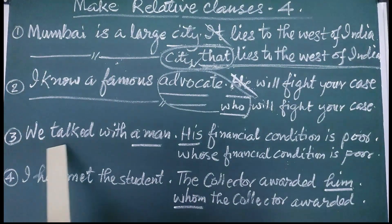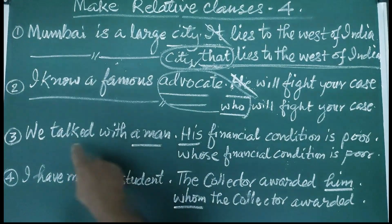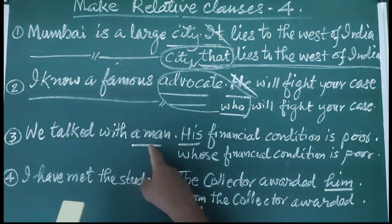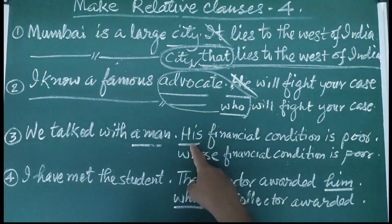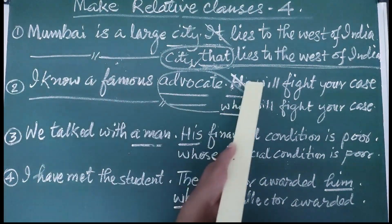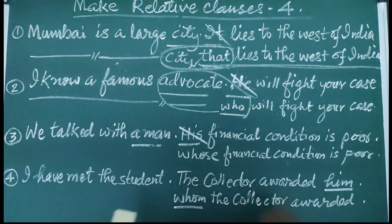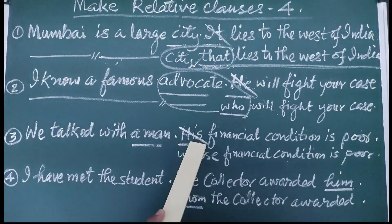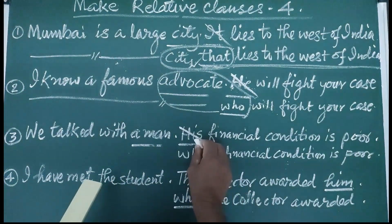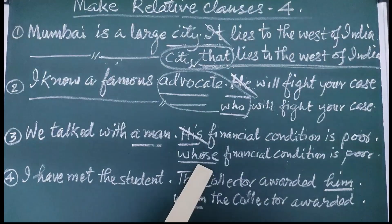Now let us see the third sentence. 'We talked with a man. His financial condition is poor.' The mention is about a man, and the equivalent of man here is 'his'. But there is a difference between 'he' and 'his'. He is the subject form and 'his' is the possessive form. So we have to delete 'his' and find which relative pronoun to use. Since 'his' comes under the category of human beings, the equivalent of 'his' is 'whose'. His is possessive form and 'whose' is also a possessive form.